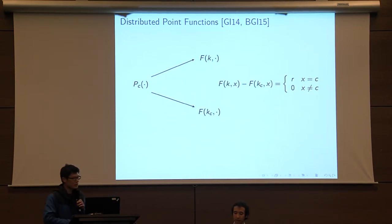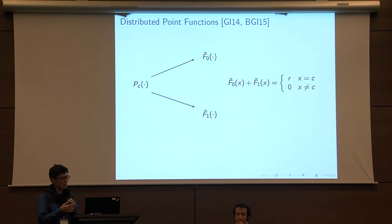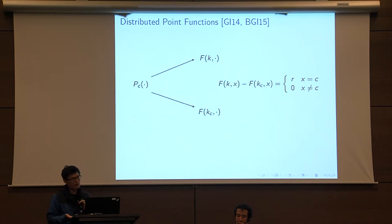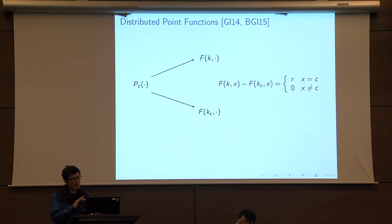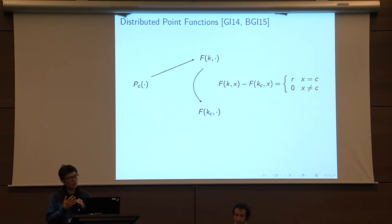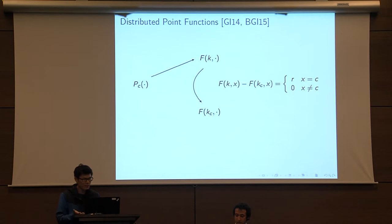One difference between DPFs and private puncturable PRFs is the following. For a distributed point function, once the point function is set, you generate f0 and f1 simultaneously. But for a private puncturable PRF, you have this adaptive offline/online property: even before you commit to the point c in the offline phase, you can instantiate the first function by generating just a regular PRF key. At a later point, once you decide on point c, you can instantiate the second function by generating the punctured key. This leads to a number of applications.